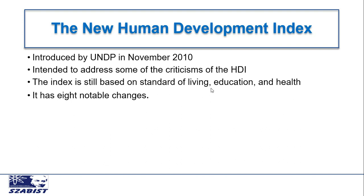The index is still based on standard of living, education, and health. It means that the indicators used in the old HDI remain the same, but their levels and major measurement variables are changed in the new HDI. It has 8 notable changes that were made to transform the old HDI into the New Human Development Index.